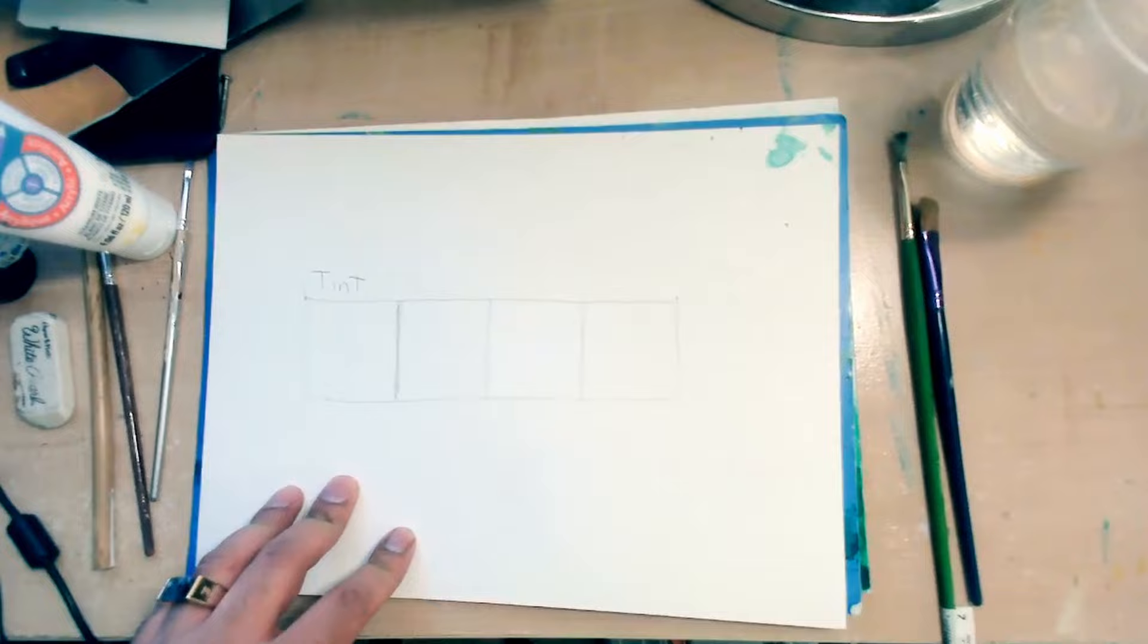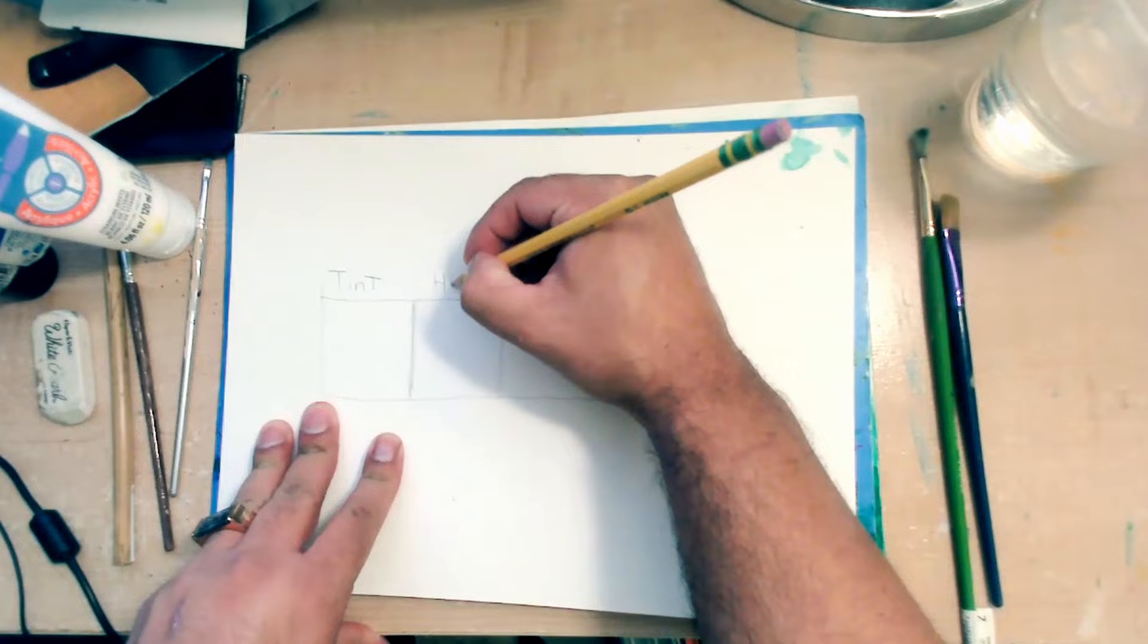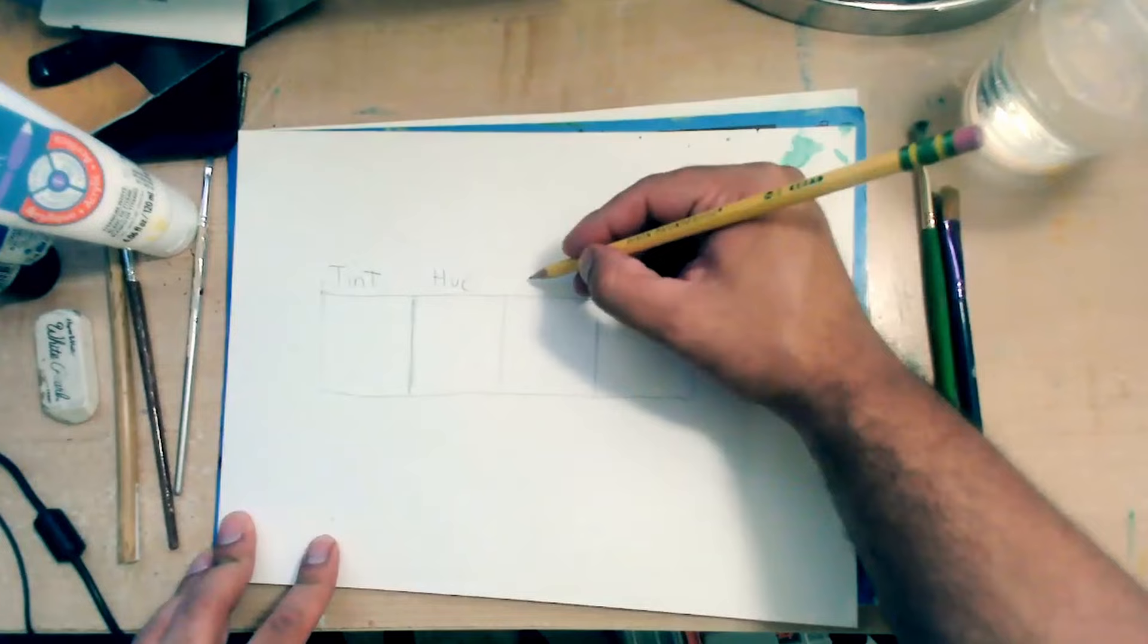So we have tint. We have hue. We have tone, T-O-N-E. And then the last one is shade.